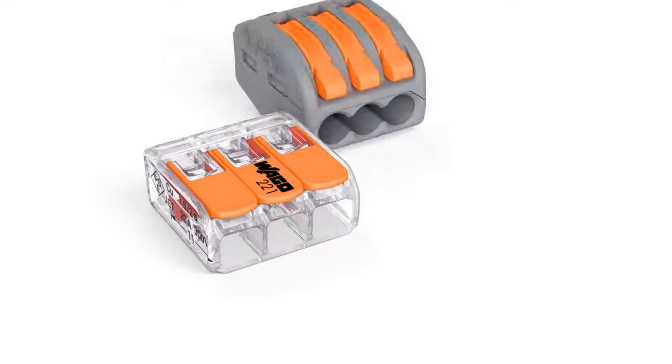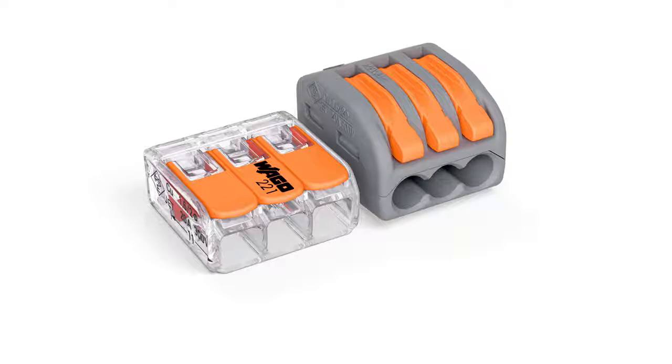WAGO's 221 series compact splicing connector for all conductor types saves 40% more space than its predecessor, thanks to a significant reduction in size.